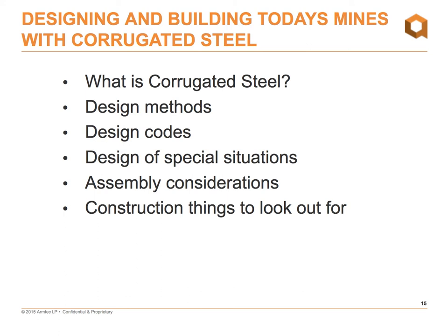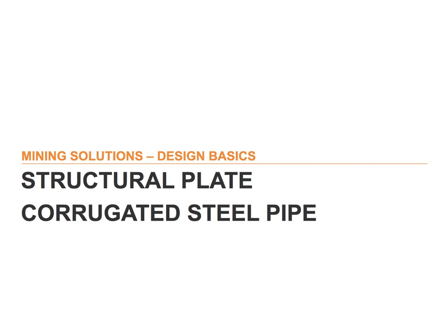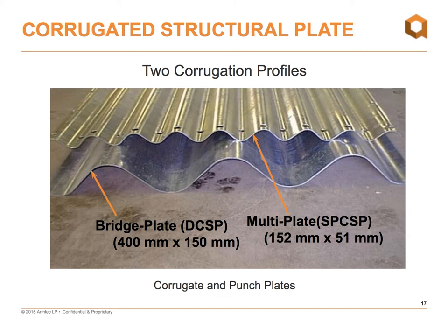Structural plate corrugated steel sheets, when bolted together, form round or various-shaped pipes or arches. Once buried, they act as flexible pipes. Until the mid-to-late 1990s, structural plate was made in a 150mm by 50mm corrugation profile, commonly referred to as multi-plate.